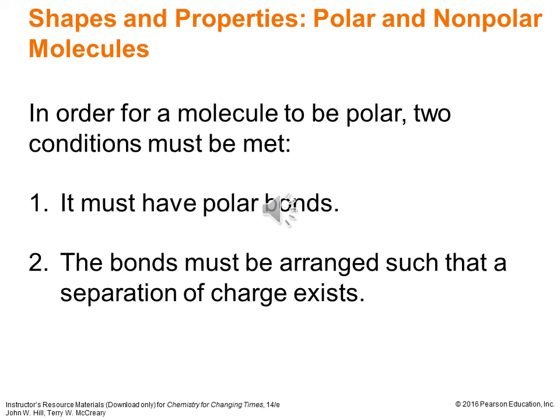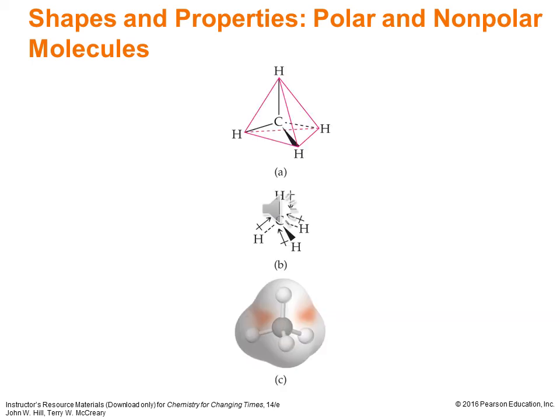Thinking back to polar bonds — when there's an electronegativity difference between two atoms in the bond between 0.5 and 2.0, we call that a polar bond. Just because we have polar bonds doesn't always mean we'll get polar molecules, but we can't have a polar molecule without polar bonds. Conditions for polar molecules: they must have polar bonds, and the bonds must be arranged so that a separation of charge exists — we can't have one polar bond in one direction canceled by another polar bond in the opposite direction. In CH₄ (methane), those C-H bonds are all slightly polar with hydrogen at about 2.1 and carbon at about 2.5.